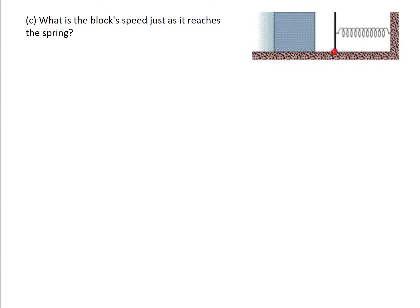The last part of the question asks for the block's speed just as it reaches the spring. The way I like to approach this is to say there's some initial point and some final point, and the energies at both points must be equal because energy cannot be created or destroyed. So I'll start with E₁ equals E₂ and list all types of energy: kinetic, spring potential, and thermal.